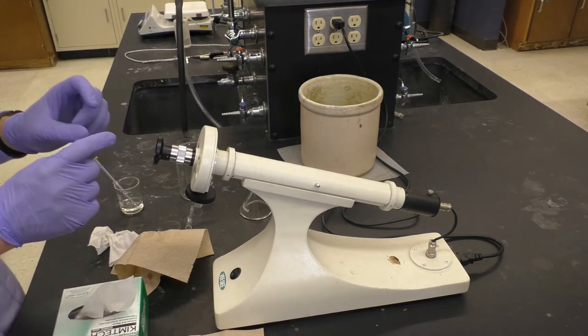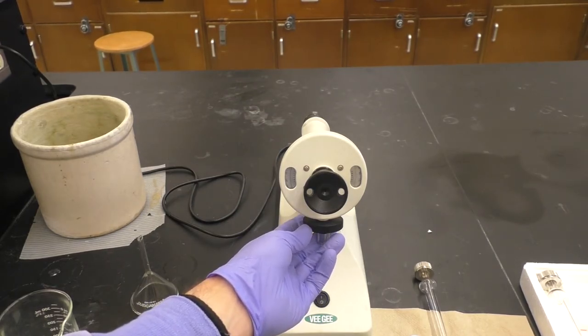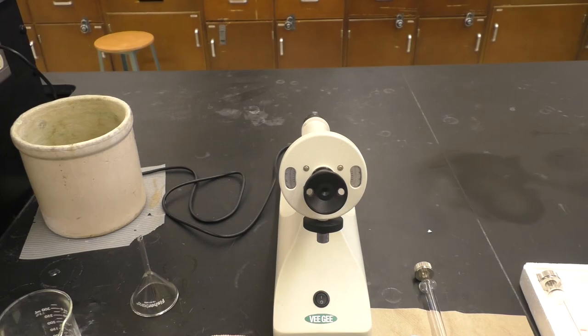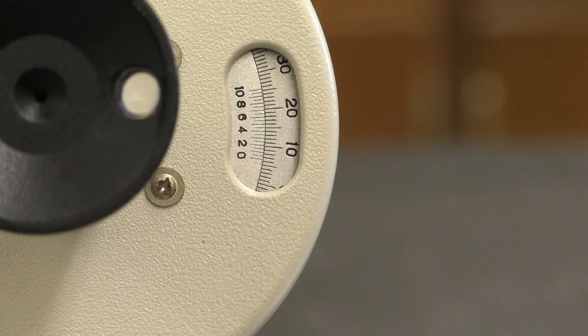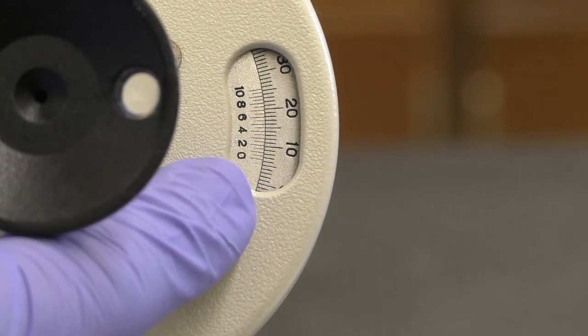Now, unlike most polarimeters that want you to place your sample in and then change the rotation using this bottom knob here to maximize the light through the solution, this particular polarimeter has been set so that you calibrate it and take the measurements by adjusting the knob to make the disk be entirely dark.